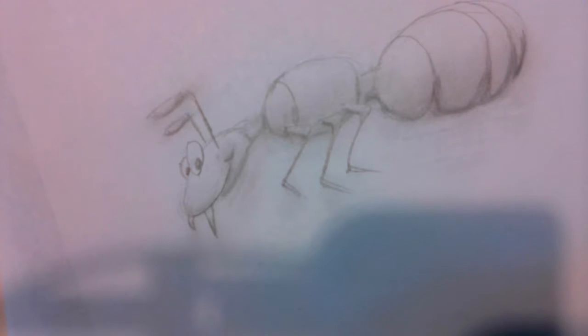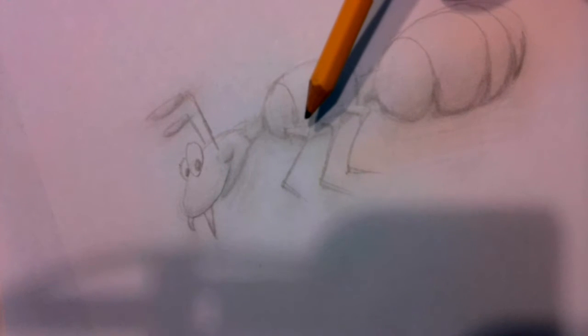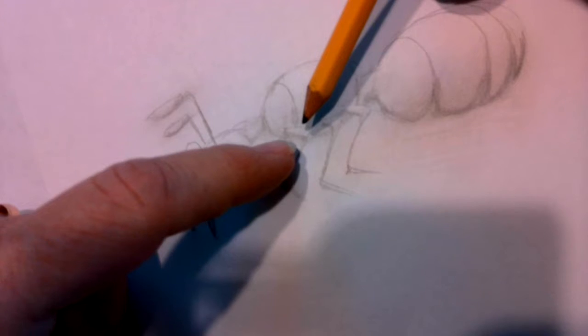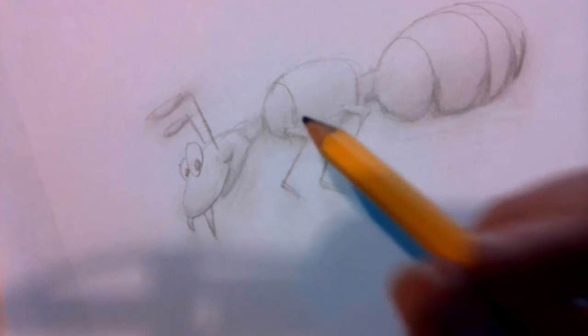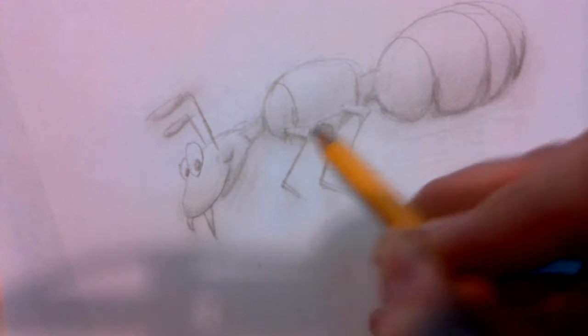All right, we're going to add shadows. When sunshine comes down from the sky, it lands on our ant. And then his little armpit blocks the sun, so whatever is under the armpit makes a little shadow.